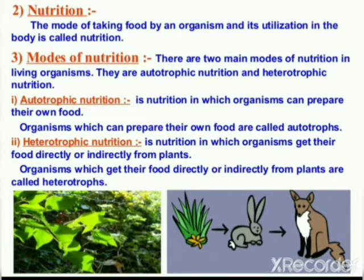There are two main modes of nutrition in living organisms: autotrophic nutrition and heterotrophic nutrition. In autotrophic nutrition, organisms can prepare their own food. 'Auto' means self, 'trophic' means preparing. So organisms which can prepare their own food are called autotrophs.